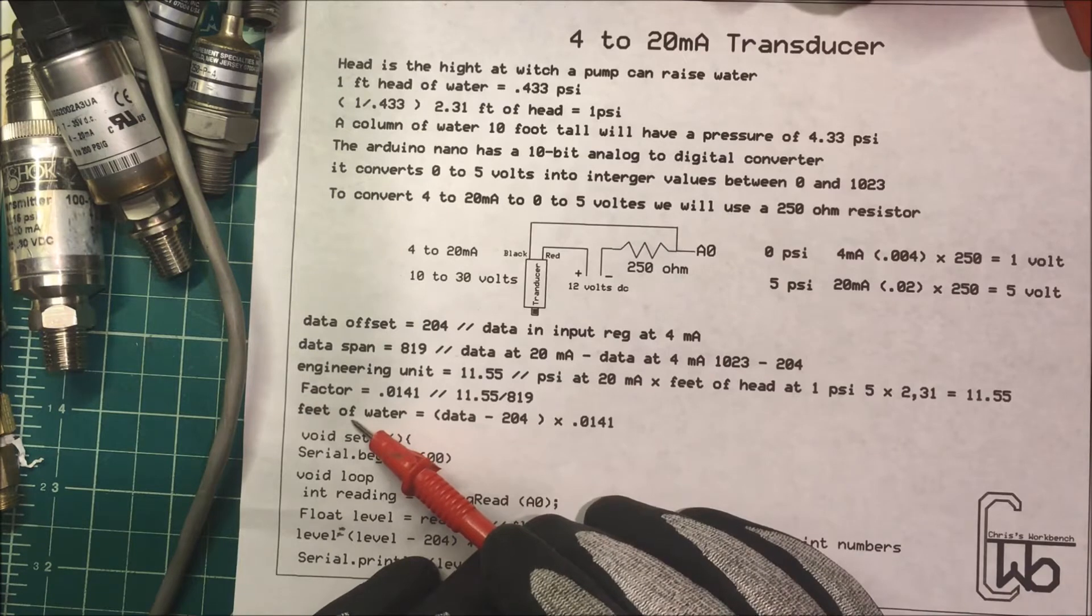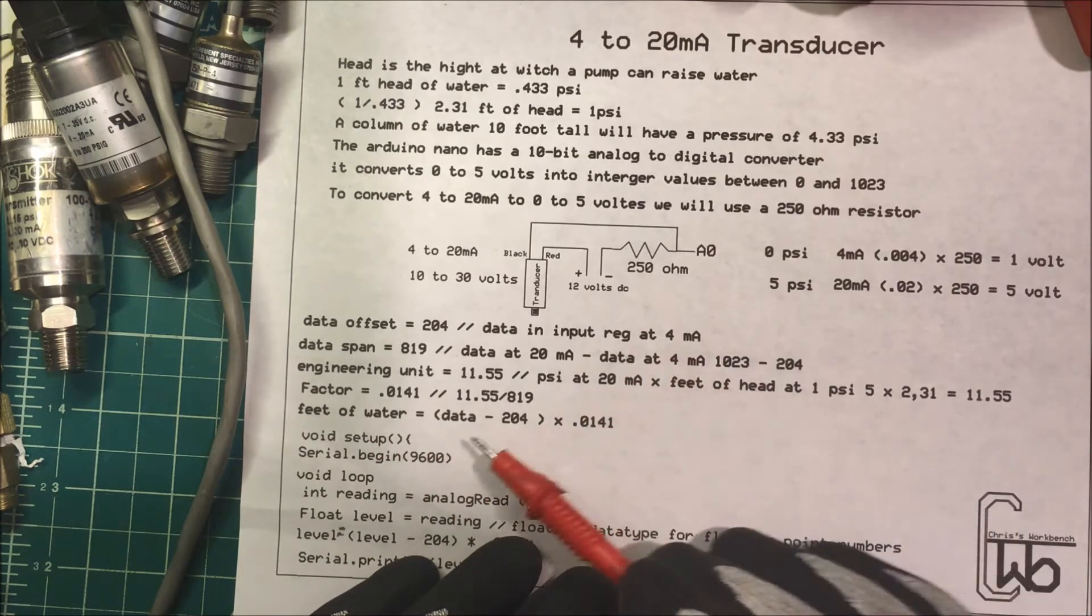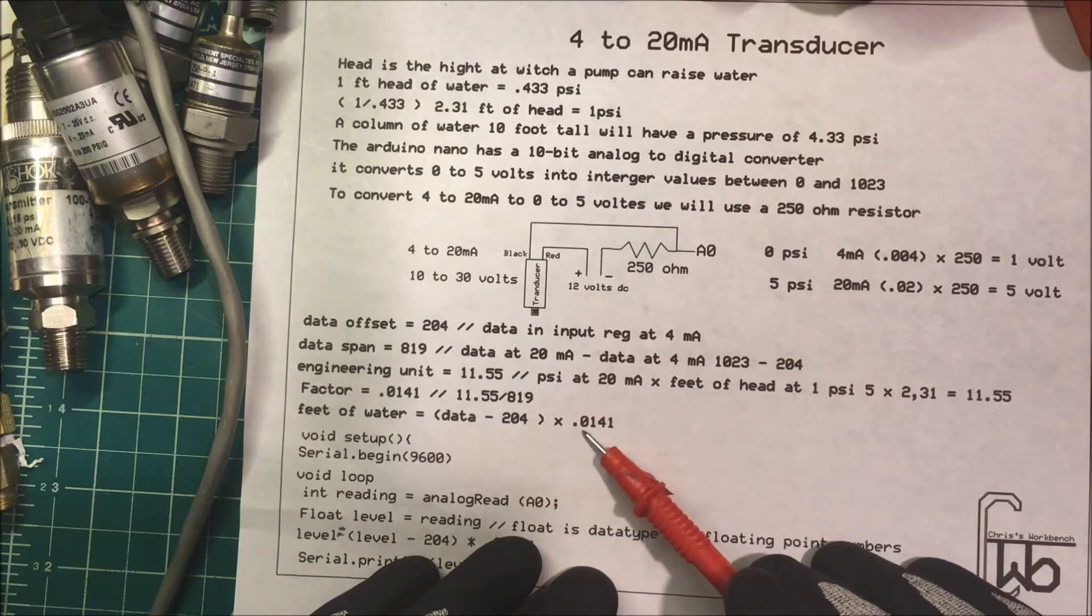So to calculate the feet of water, we just take the data that's in the register minus 205 times 0.0141.